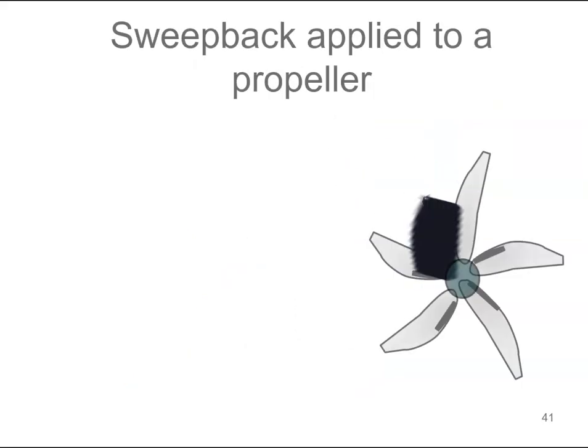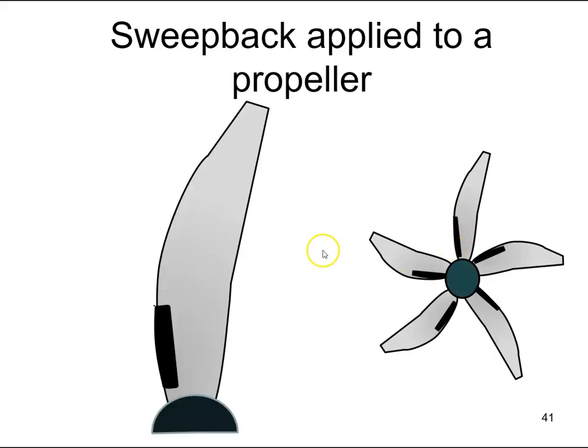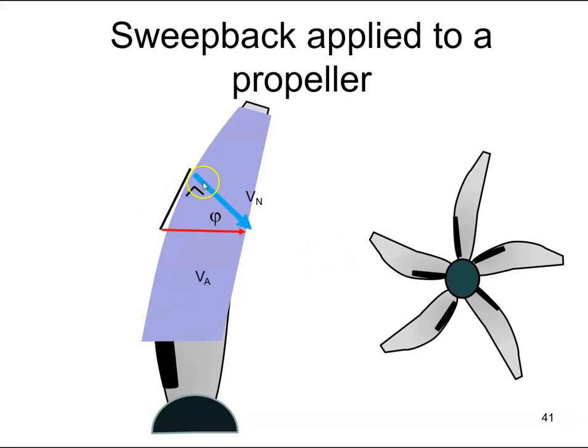So how does that apply to my propeller? If I have a high speed propeller blade it has the same sweepback function. There is some sweepback on the propeller and this allows the airflow over the propeller blade to increase. We can increase a little bit faster because the velocity of the airflow normal to the propeller would be that bit less.